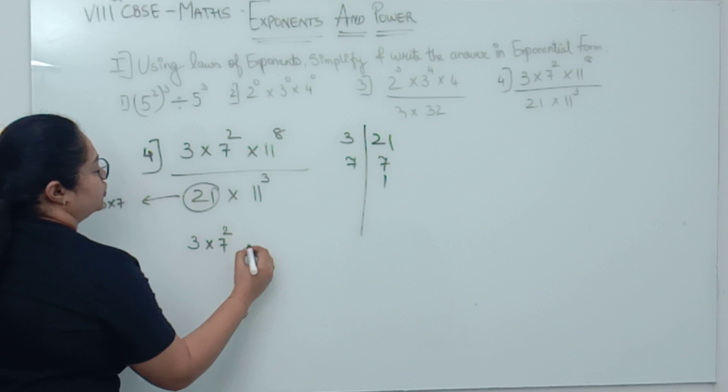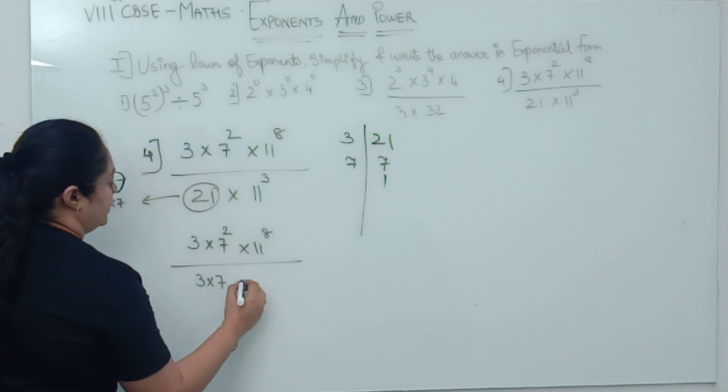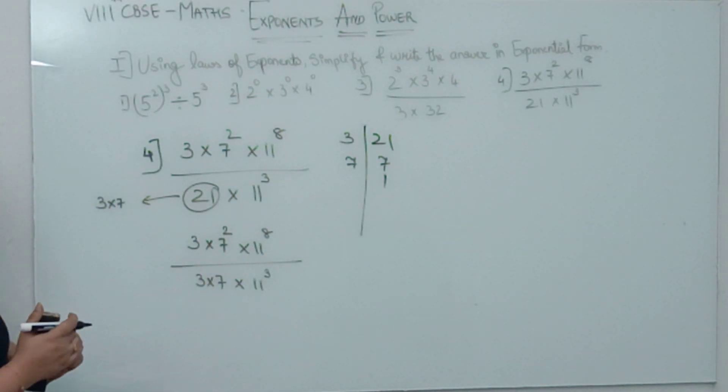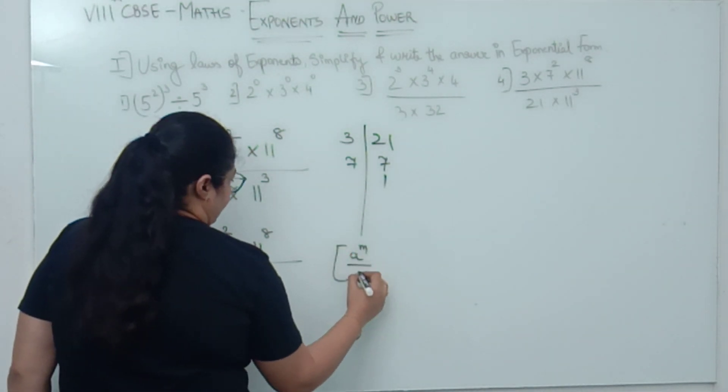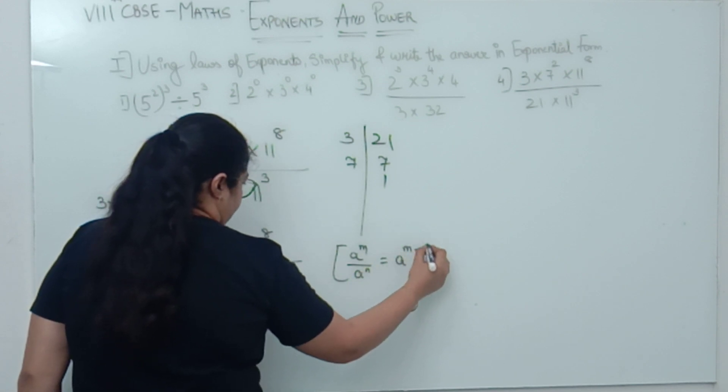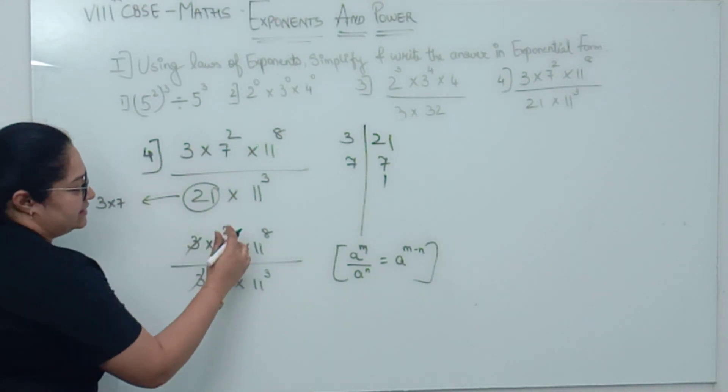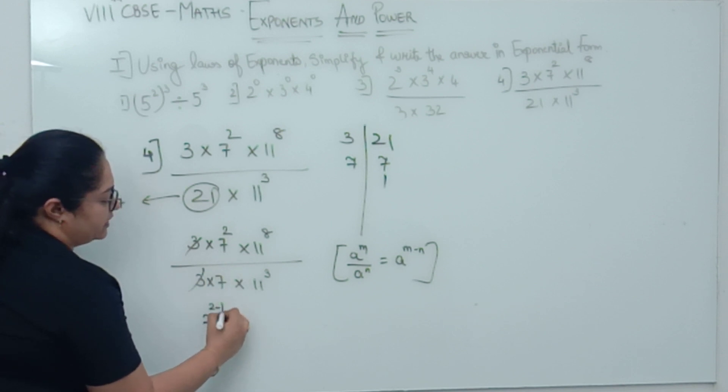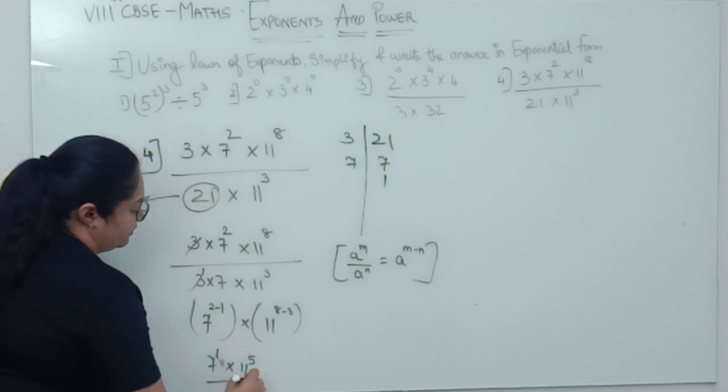Let us see the next step. 3 × 7² × 11⁸ divided by 3 × 7 × 11³. Now it looks similar. The law you are going to apply is a raised to m divided by a raised to n equals a raised to m minus n. 3 and 3 cancel. What remains? 7². What will happen? 7 raised to 2 minus 1 × 11 raised to 8 minus 3. So, what will be your answer? Sorry, 7¹ multiplied by 11⁵ will be your answer.